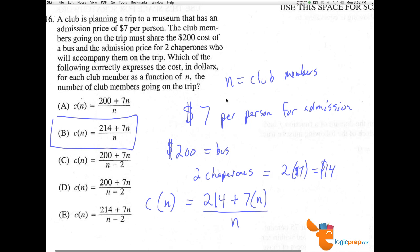When people mess this up, they sometimes think $200 accounts for both the bus and the two chaperones. But it's $200 cost of the bus and the admission price for two chaperones who will accompany them on the trip.